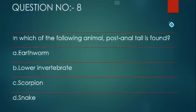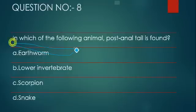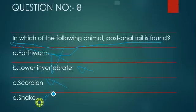Internal and external intercostal muscles are both attached with the ribs. So the answer is that intercostal muscles are attached with the ribs. Now we are moving to question number six.